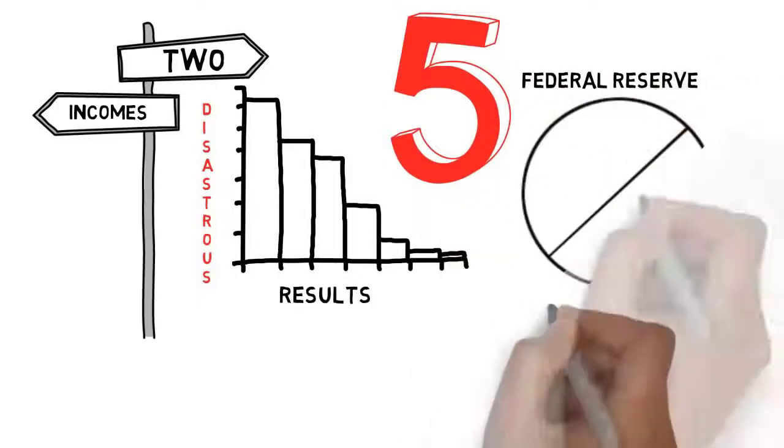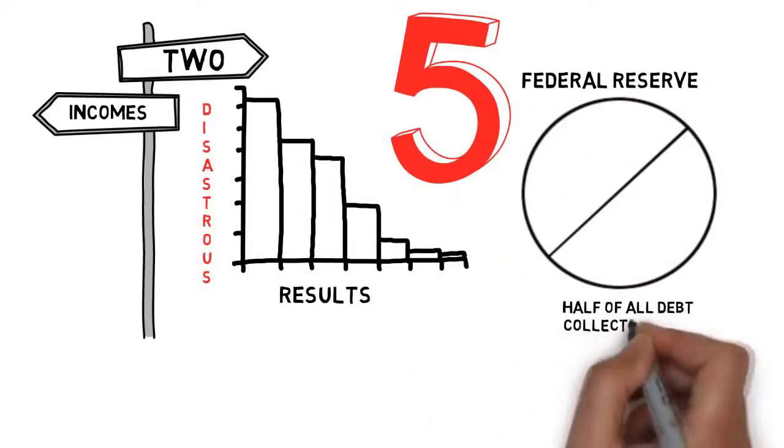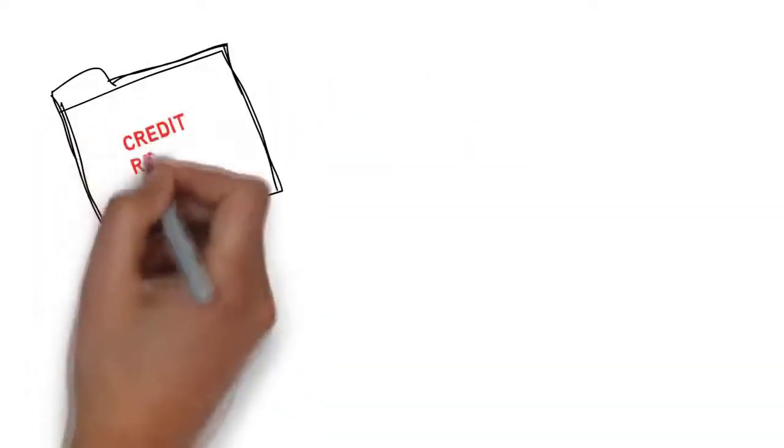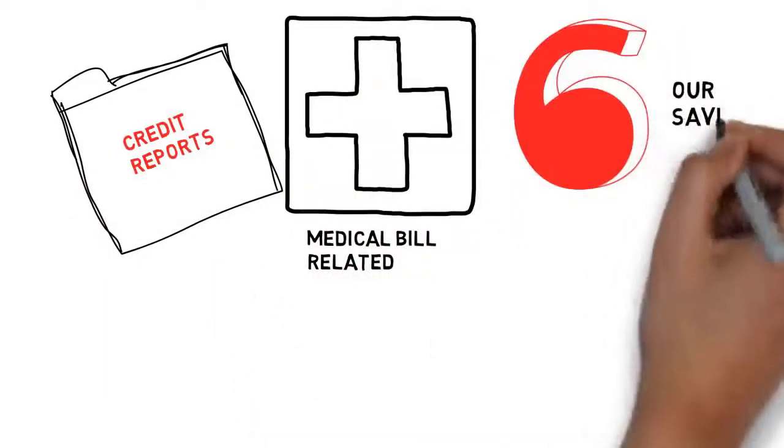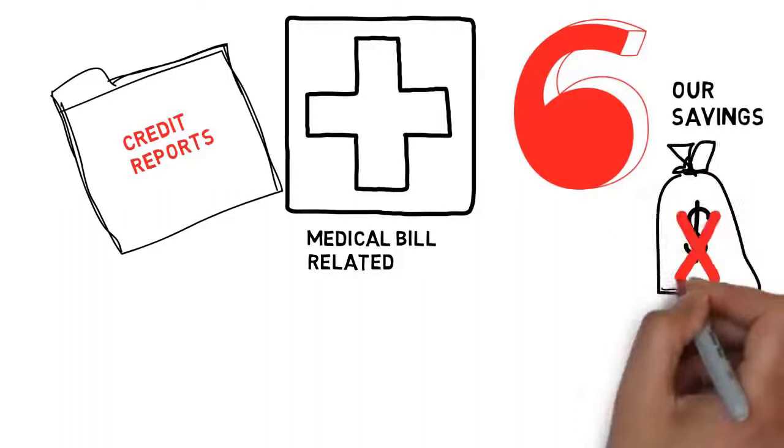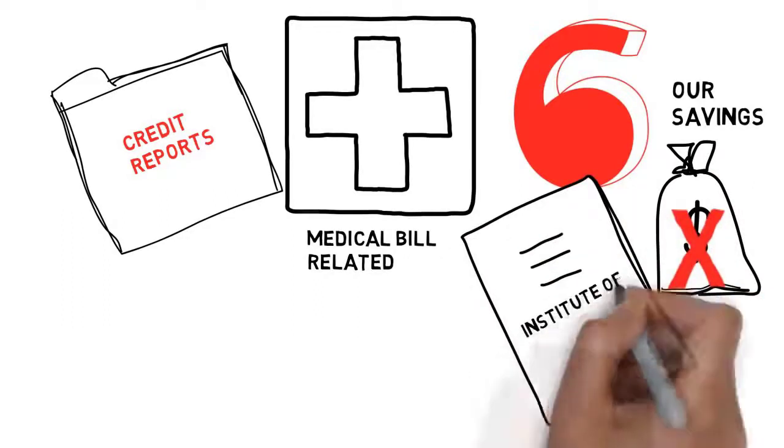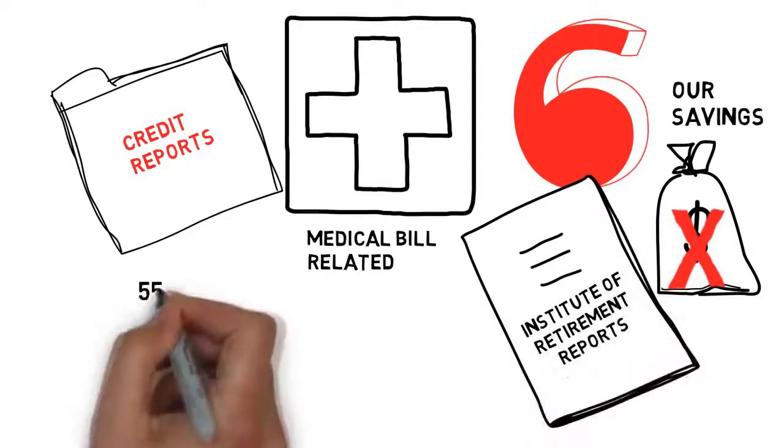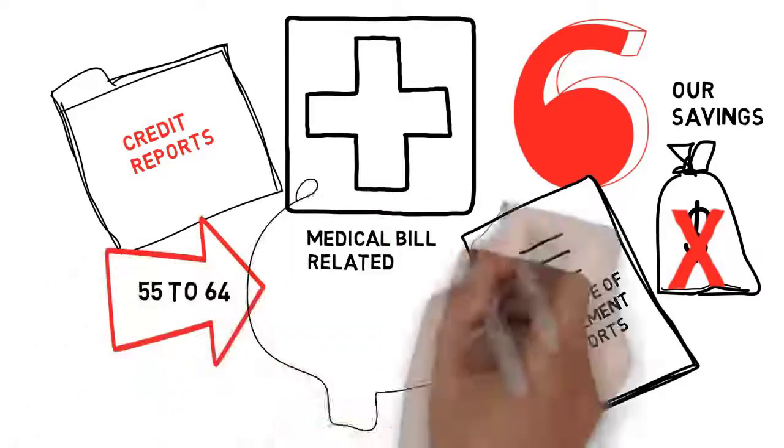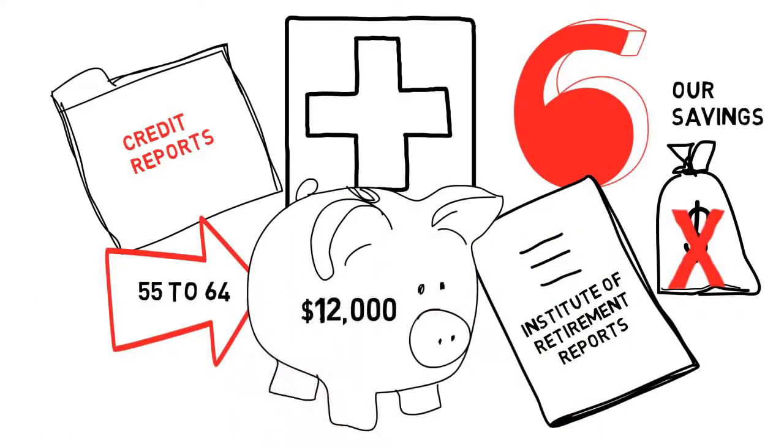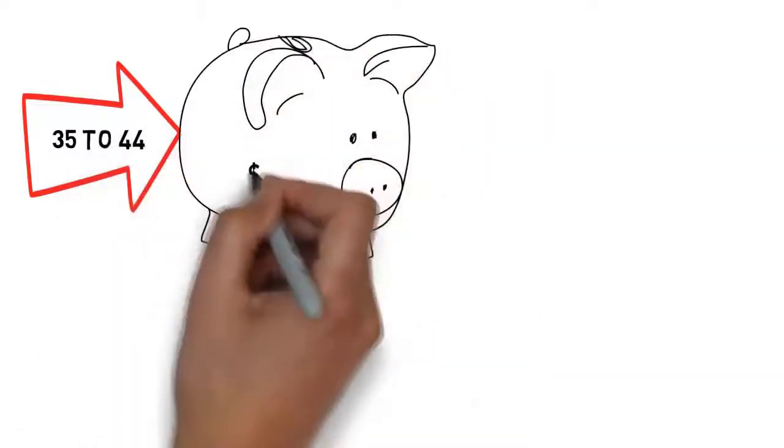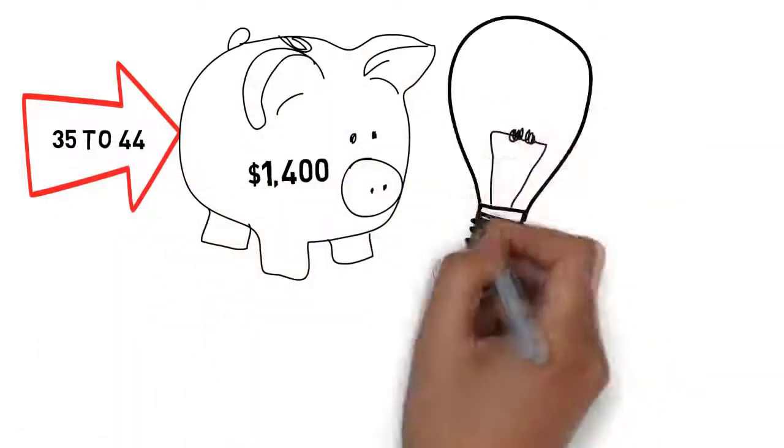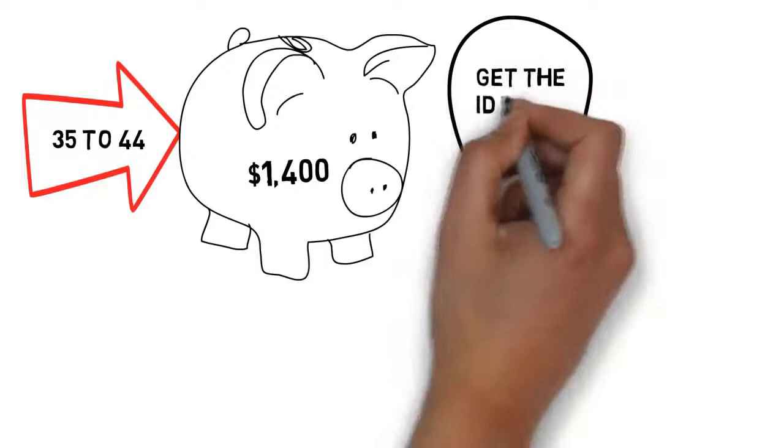According to the Federal Reserve, more than half of all the debt collection activity on credit reports in America is medical bill related. Well, at least we have our savings. Not really. The National Institute of Retirement Security reports that Americans age 55 to 64 have about $12,000 in savings. The group 35 to 44 has about $1,400 in savings. We could keep going, but I think you get the idea.